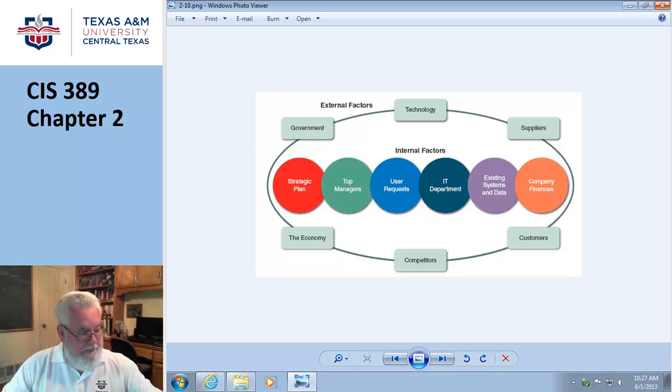Okay, picking up where we left off on page 57, we're talking about the external factors that can affect a project. And they're listed here: government, technology, suppliers, competitors, those kind of things.